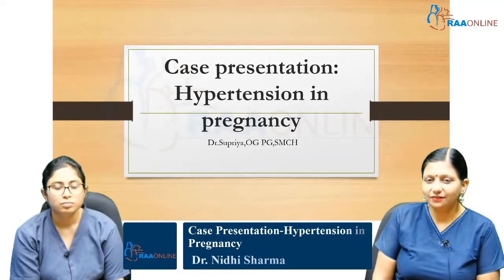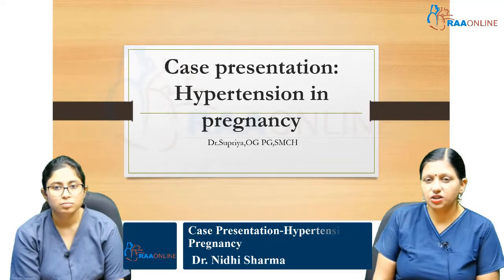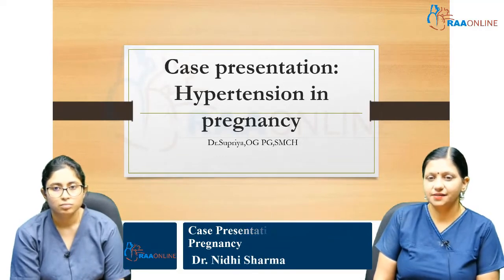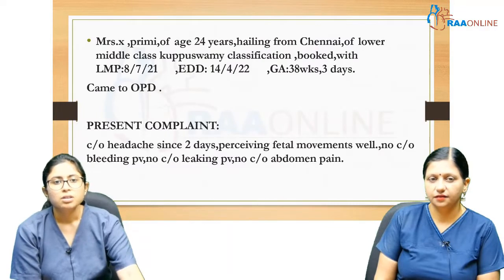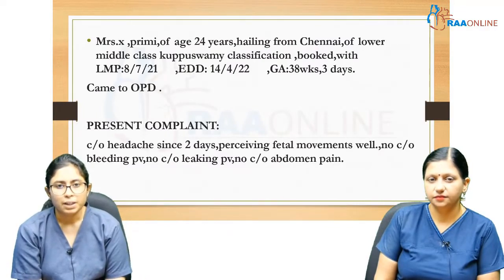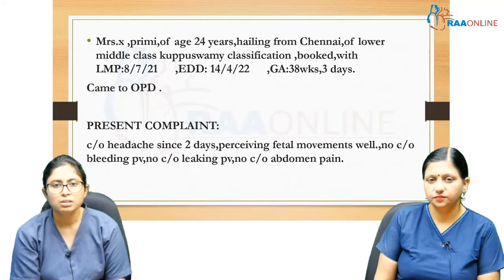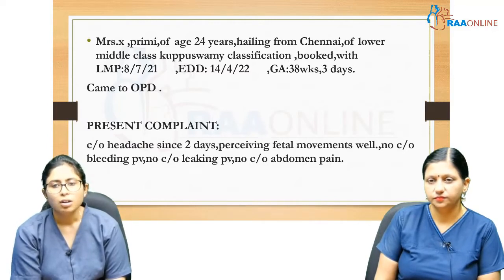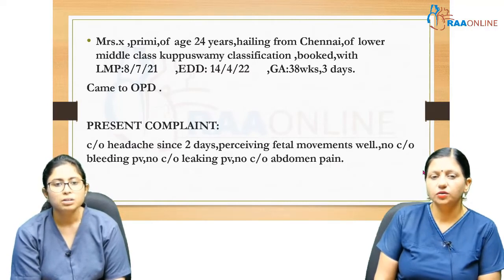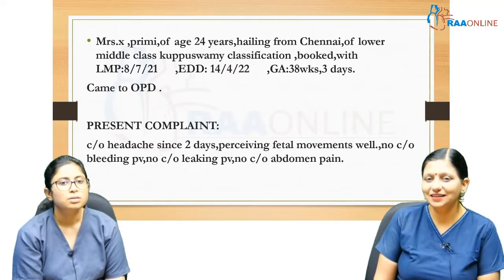Good afternoon. Today we have a case presentation on hypertension in pregnancy. Mrs. X, primigravida, age 24 years, hailing from Chennai, of lower middle class, booked with us with LMP 8-7-21 and EDD of 14-4-22, gestational age 38 weeks 3 days, came to the OPD. How do you calculate the EDD?